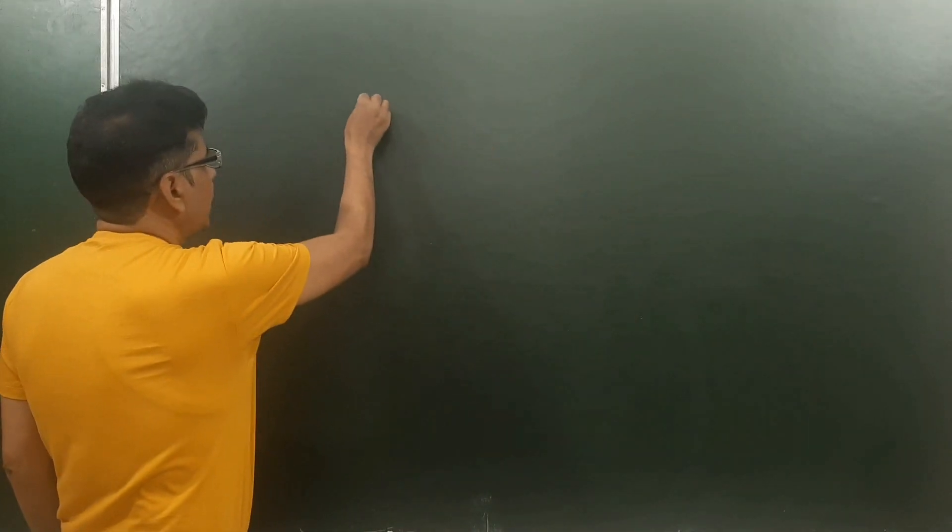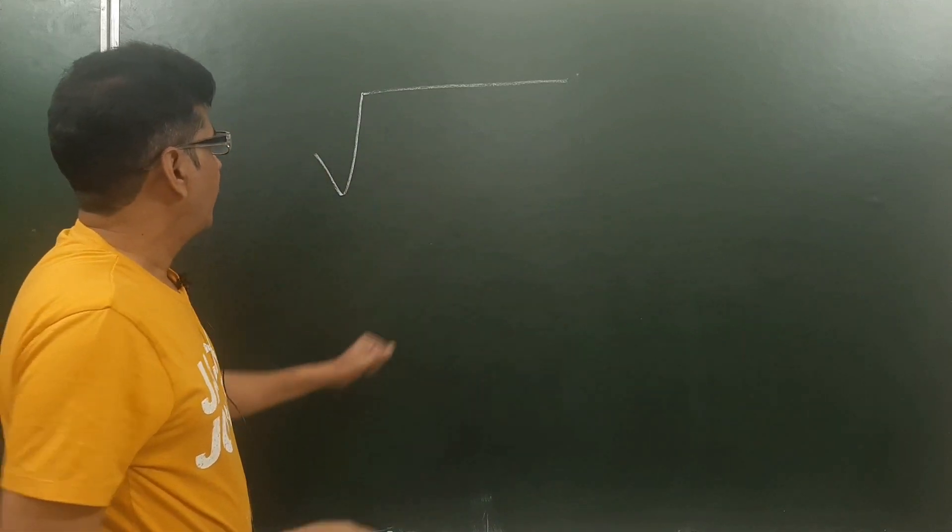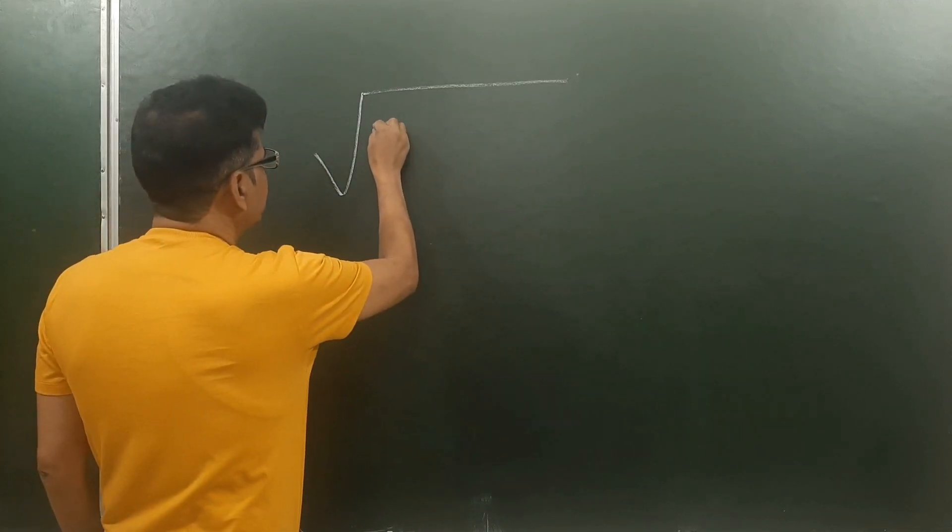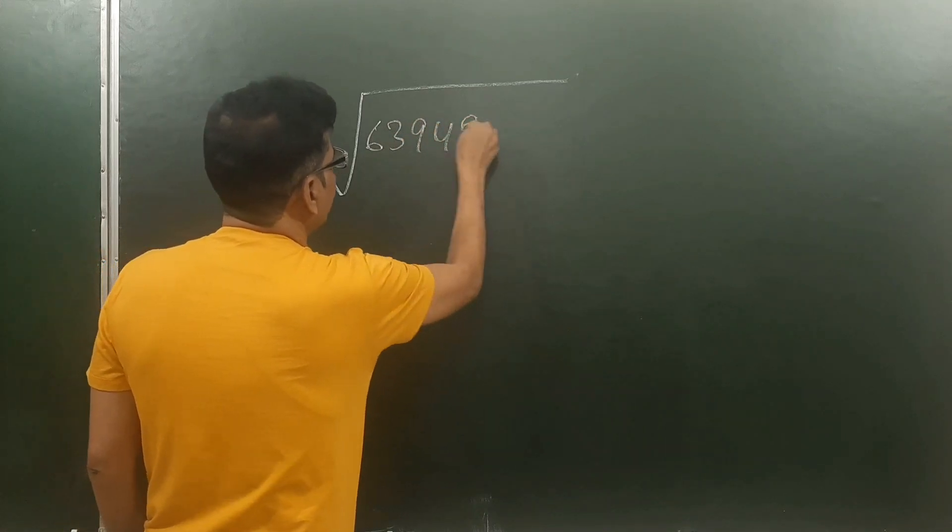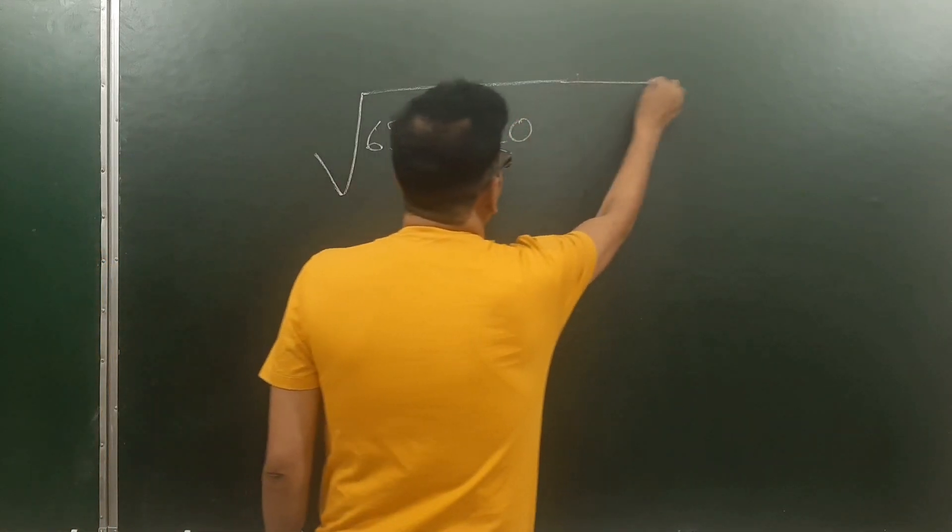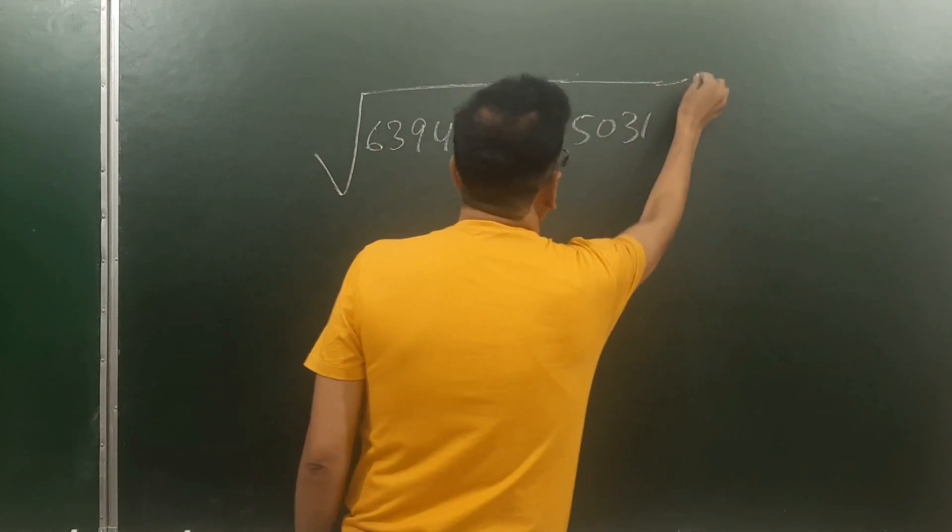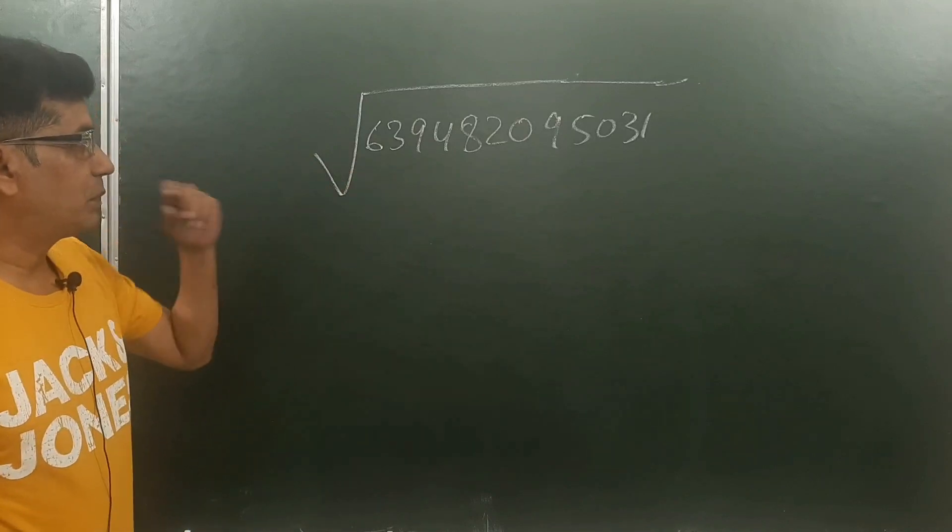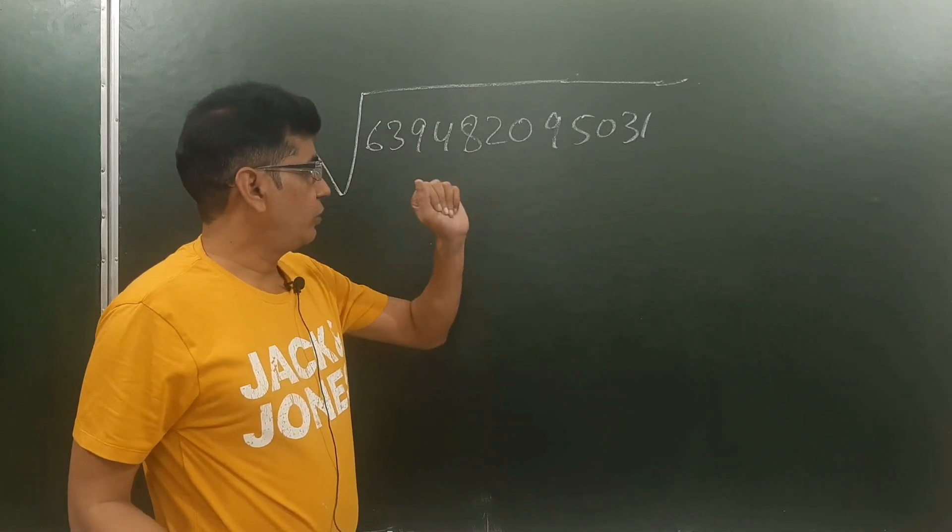Hello students, do you feel uncomfortable solving square roots with tedious or complicated numbers like this: 639482095031? Just a big number, a jumbled type of number to take square root of.